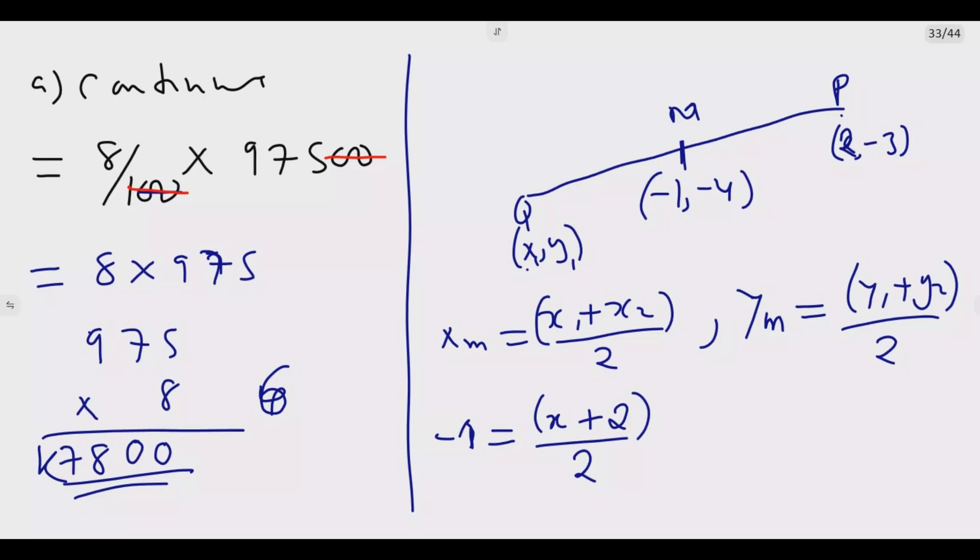Then I know this is X1 and Y1. So the midpoint is now -1 equals X plus 2 over 2. Then what does this simplify? We cross multiply. So 2 times -1 gives me -2 equals X plus 2. What is X? So it becomes -2 minus 2 equals X. So X is equal to -4.